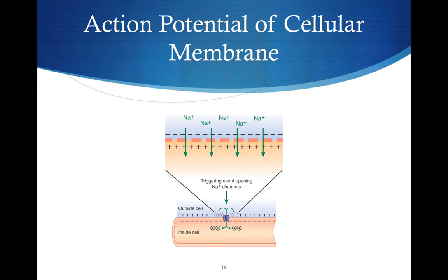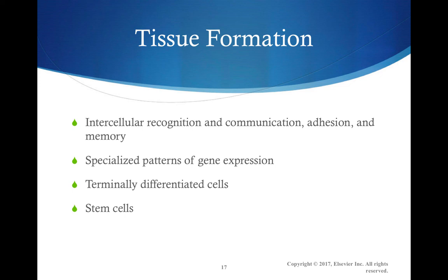Lastly, in this chapter, it goes into a lot of information about tissue formation. What we basically need to understand is that there's a highly coordinated communication and memory process that takes place in terms of how tissues are formulated, and that these formulations are a result of specialized gene patterns and differentiated cells. All cells start in the same place as stem cells, and then at the end they become differentiated cells that do different things.